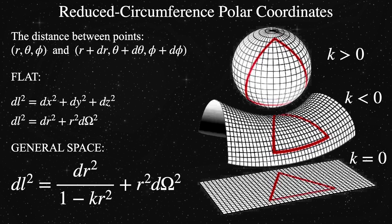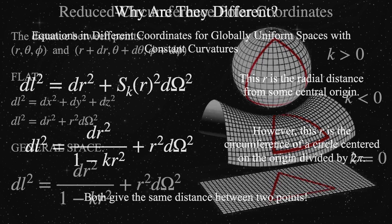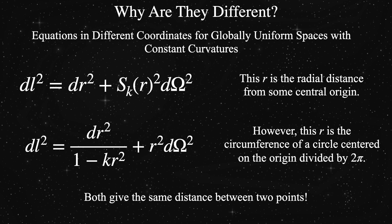So what is this new r? Here is our metric expressed in two different coordinate systems. The top one is the hyperspherical coordinates, and the bottom one is the reduced circumference polar coordinates. The omega is the same in both cases. This is because of the inherent isotropy of these constant curvature spaces.